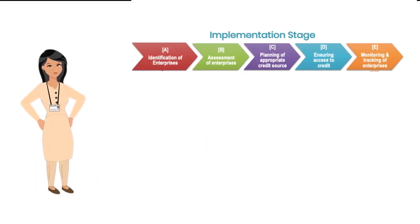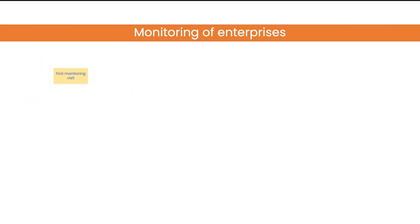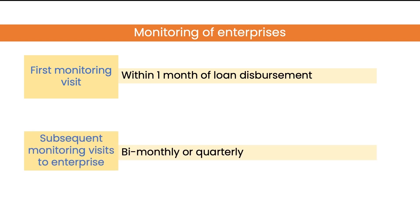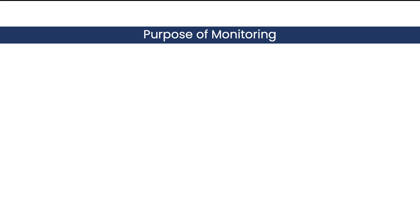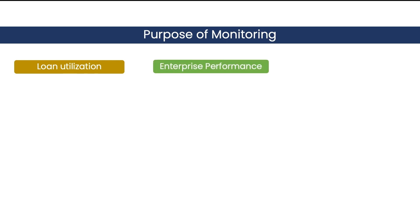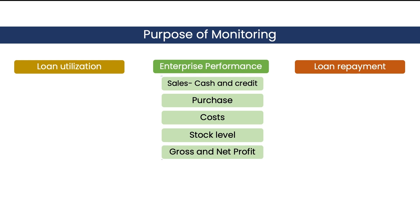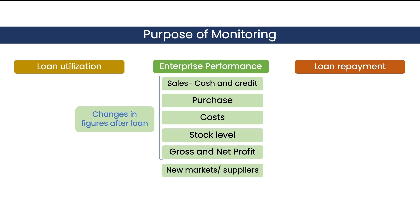The final step in the implementation stage is post-disbursement monitoring. The first visit to the enterprise for monitoring should be conducted by Vittisakhis within the first month of disbursement, and thereon done on a bi-monthly or quarterly basis. The main purpose of monitoring visits will be to check if the entrepreneur has utilised the loan properly, to check the performance of the business, and to check if the entrepreneur is repaying the loan on time. To assess business performance, Vittisakhis should check for sales volume, cash and credit sales, purchases, costs, stock levels, gross profit and net profit, and observe changes in these figures after the loan. She should also check if the entrepreneur could add new markets, new suppliers or new workers after the loan.